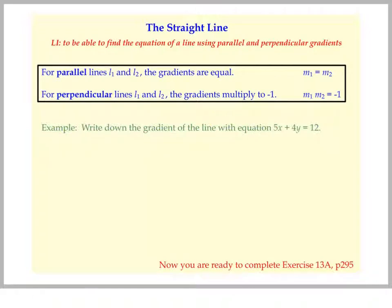Right, so let's show you how it's done. We've got to write down the gradient of this line, 5x plus 4y equals 12. We need to get it in the form y equals mx plus c. That's the best thing to do.